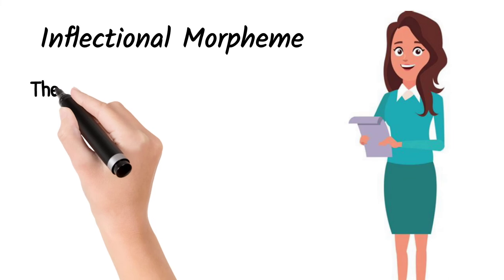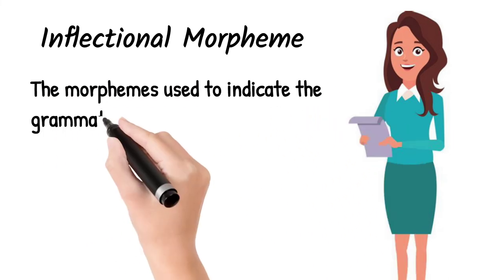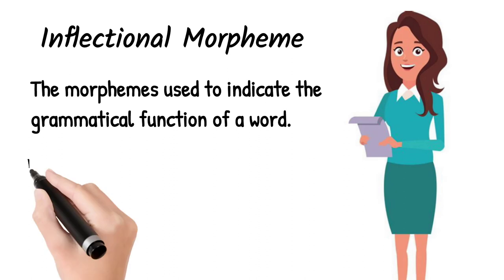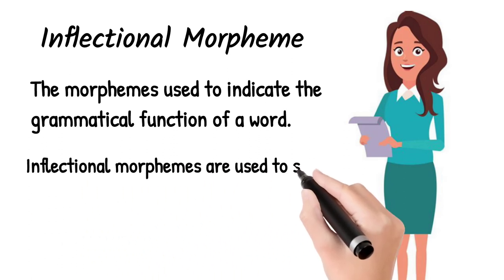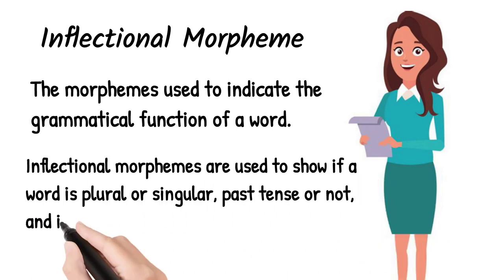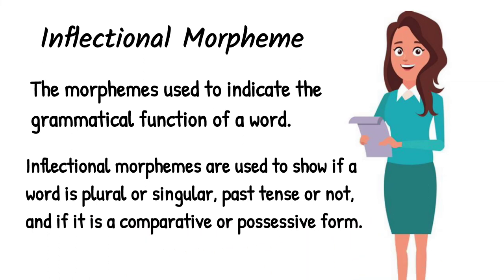Now moving towards the inflectional morpheme. The morphemes used to indicate the grammatical function of a word are called inflectional morphemes. Inflectional morphemes are used to show if a word is plural or singular, past tense or not, and if it is a comparative or possessive form. Inflectional morphemes are used to show if the word is singular or plural, if it is present tense, past tense, or present continuous tense, or if it shows a comparative degree or superlative degree.